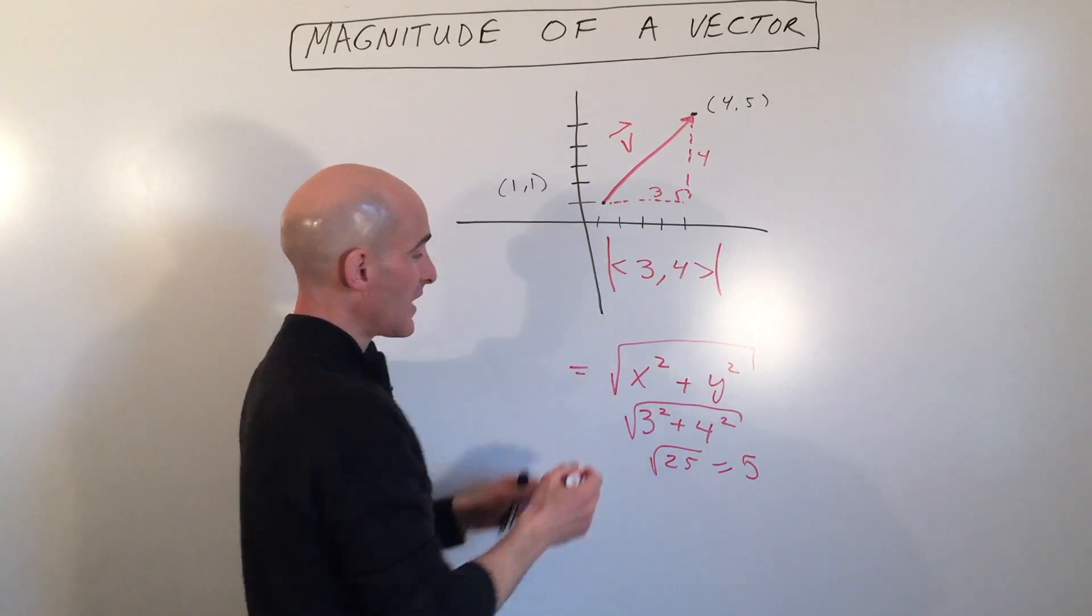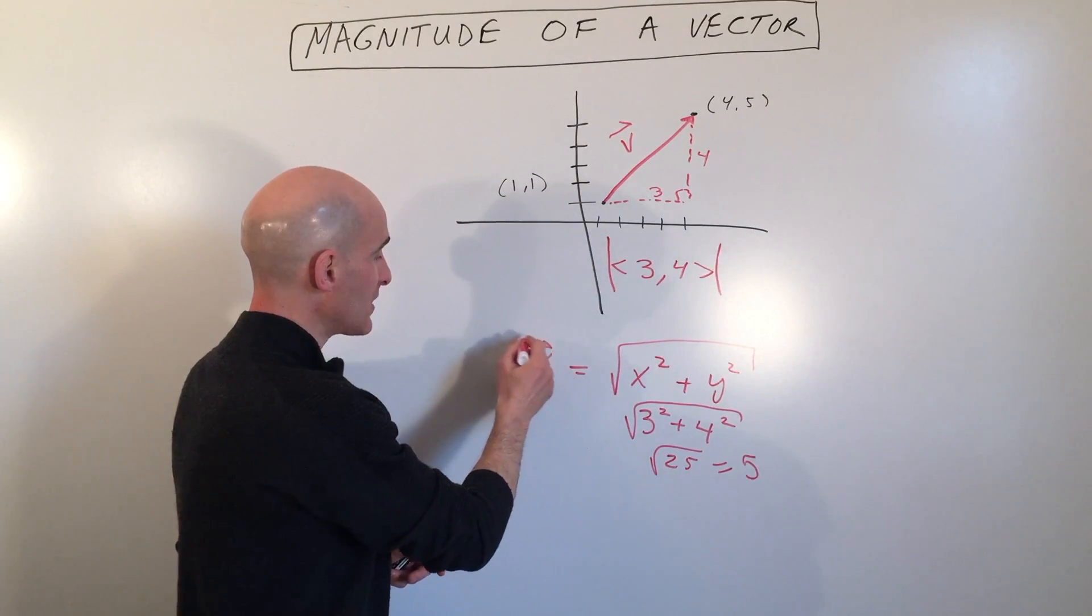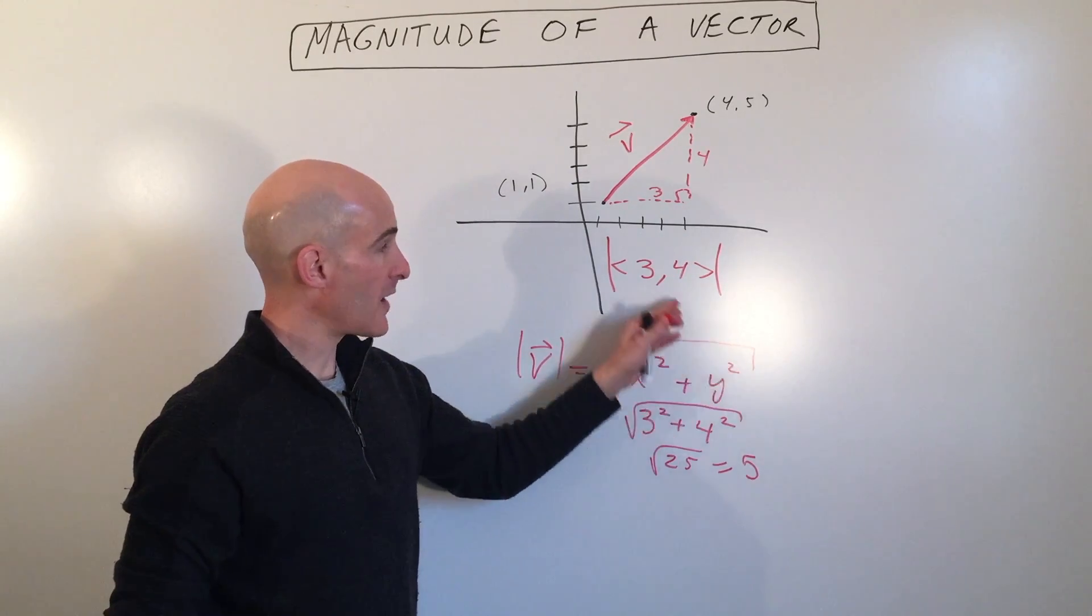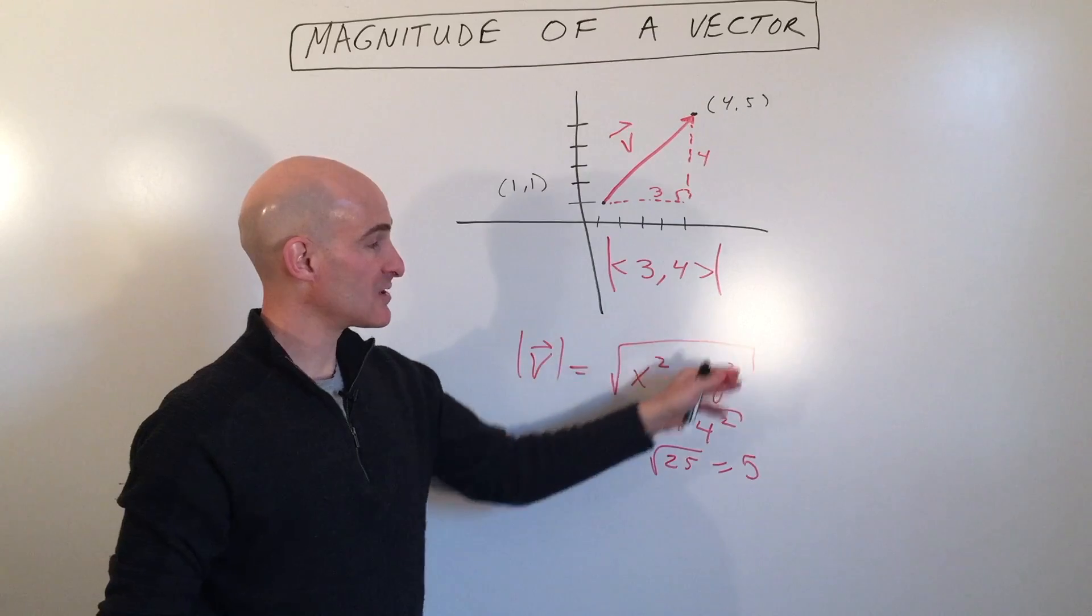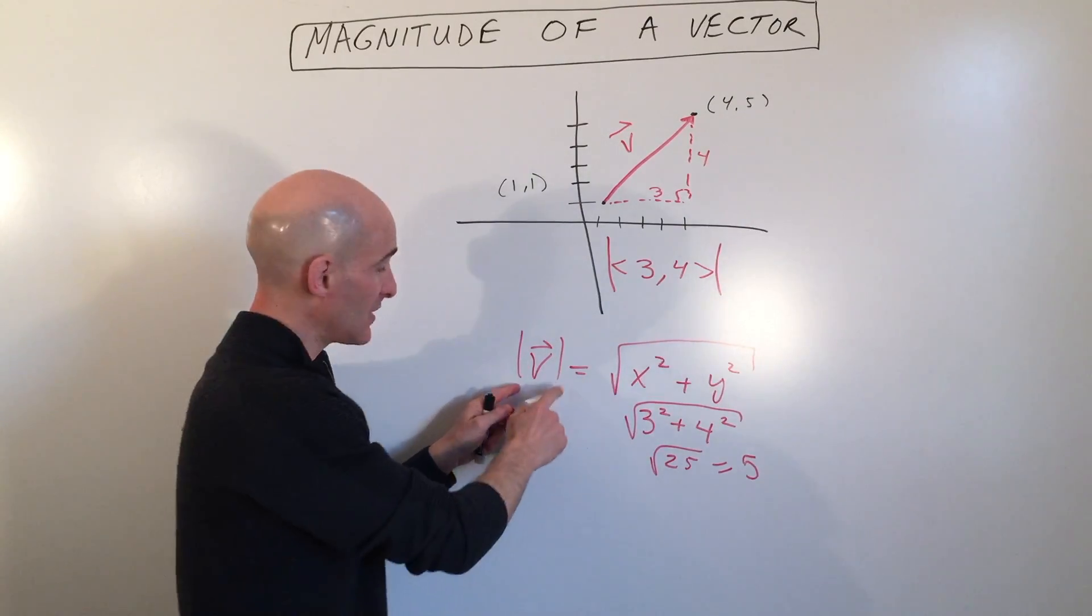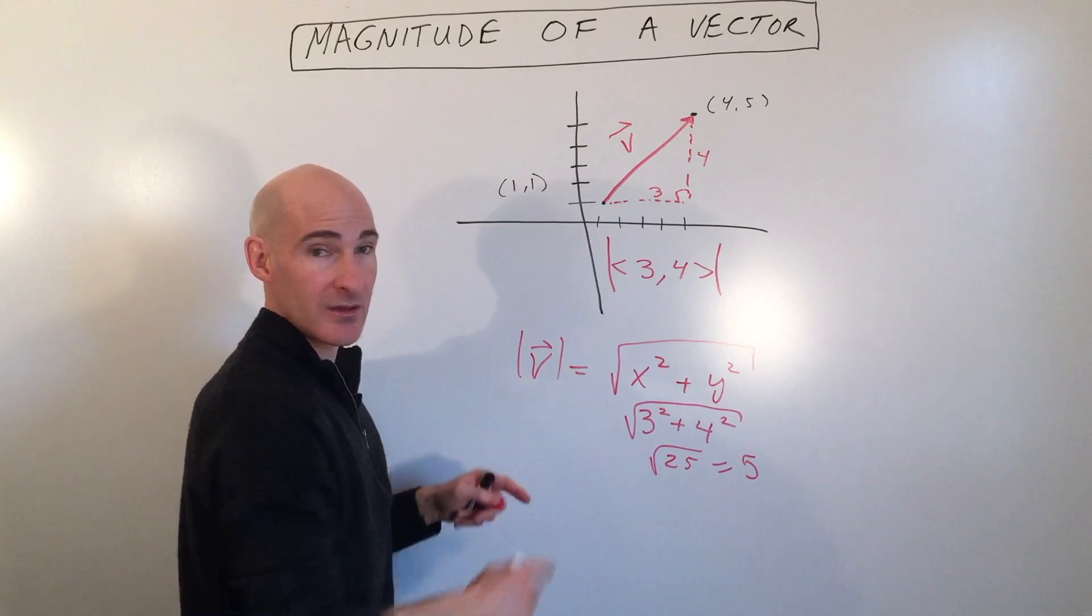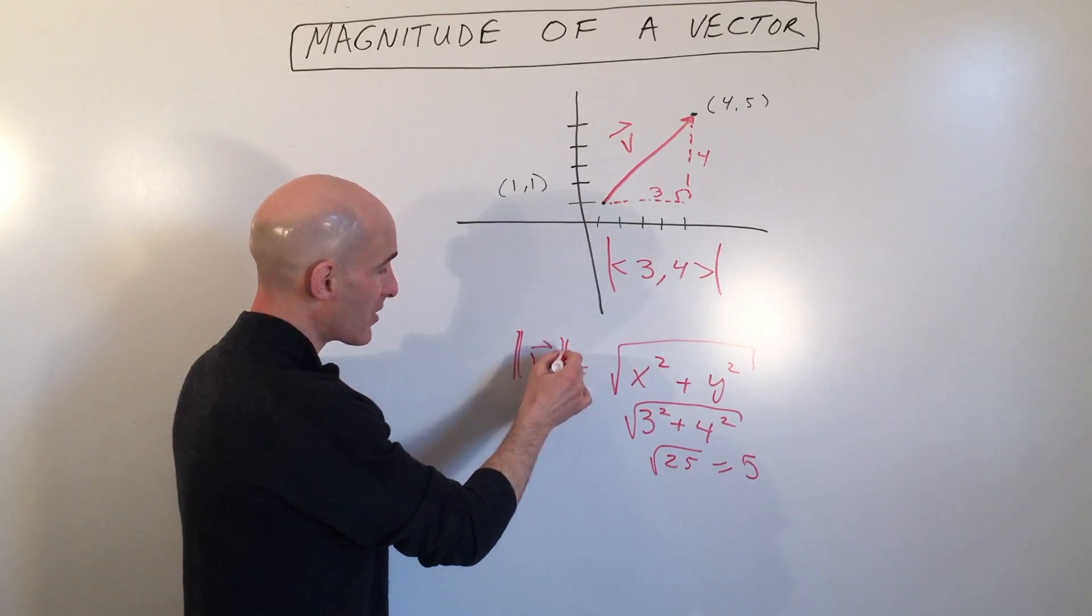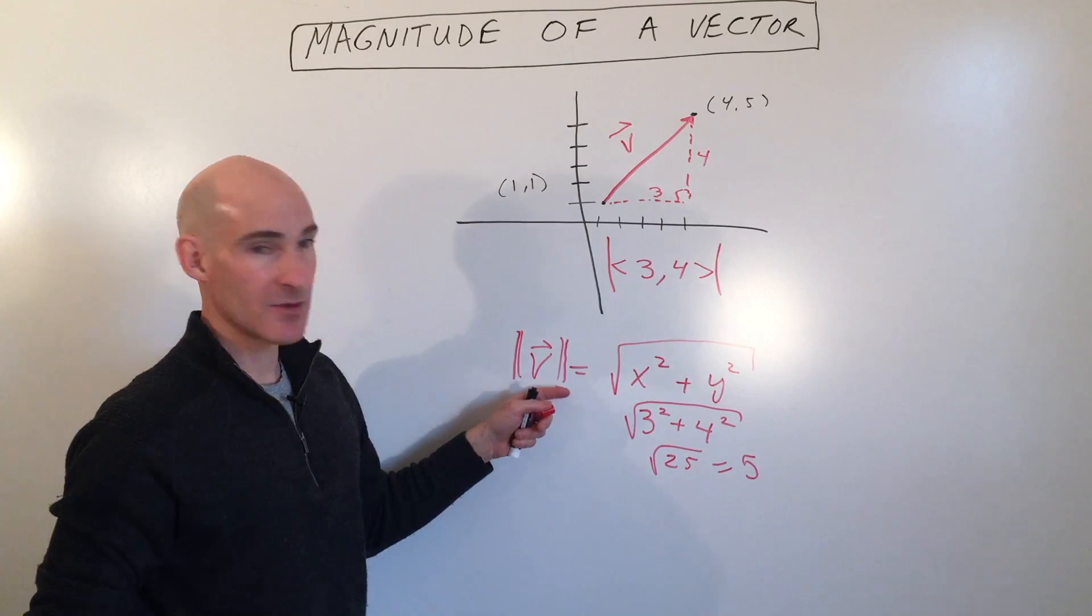But some students like to have a formula here to work with. So what you can do is just think of squaring the x component, squaring the y component of the vector, adding them together, and taking the square root. And that'll give you the magnitude, represented by these bars here around the vector. Sometimes some books will use two bars like that. So that just represents the magnitude.